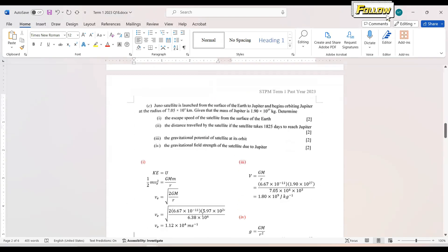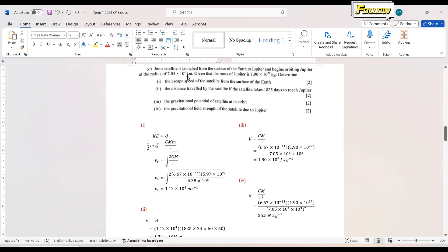We move on to question C. Juno satellite is launched from the surface of the Earth to Jupiter and begins orbiting Jupiter at the radius of 7.05 times 10 to the 4 km.